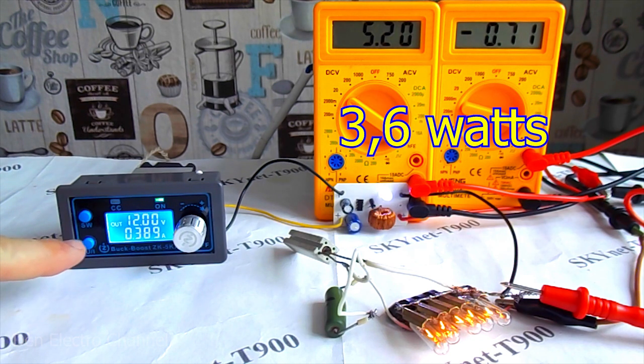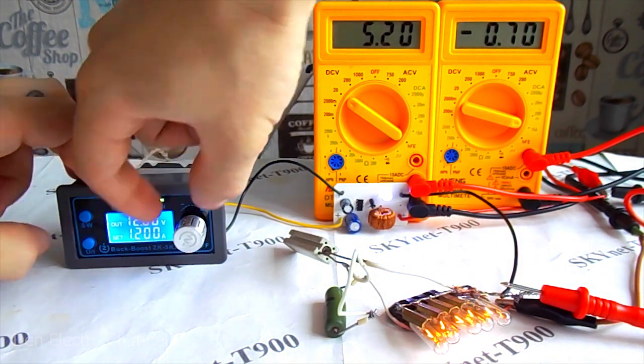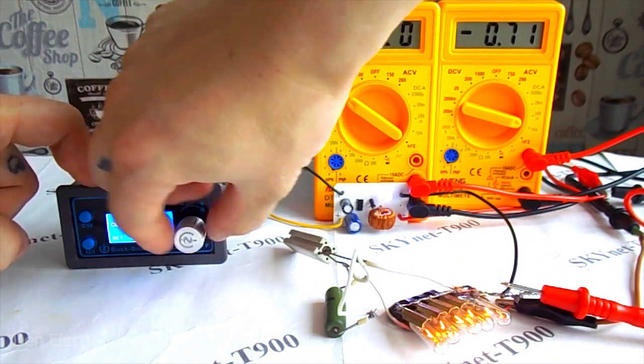And at the input, 389 milliamps. Efficiency is 76%. Then I raise the input voltage and set it to 20 volts.